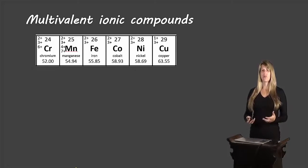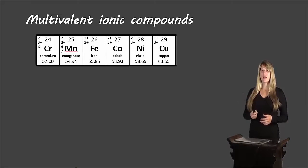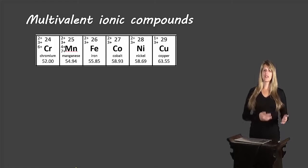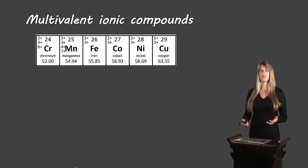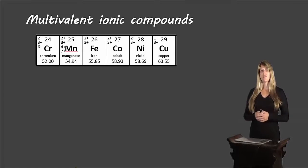Let's start off with what multivalent ionic compounds actually are. They're made of multivalent ions. If we take a look at these elements here taken from the periodic table, we can see something special in each one of those squares. It indicates the possible charges that each of those elements can take to form an ion. Unlike elements that only had one possibility for charge based on their column in the periodic table, here there are actually several possible charges.